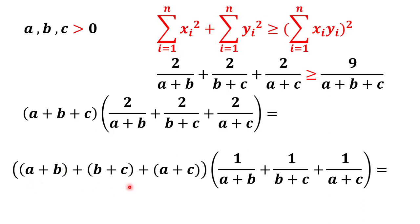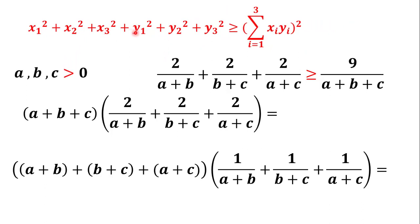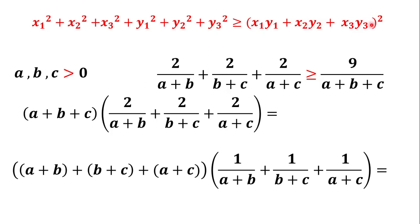In this case we have three terms in one parentheses and three fractions in the other, so n is equal to 3. We can expand the sigma notation: sigma of xᵢ squared equals x₁² plus x₂² plus x₃², and sigma of yᵢ squared equals y₁² plus y₂² plus y₃². And sigma of xᵢyᵢ, all squared, equals (x₁y₁ plus x₂y₂ plus x₃y₃) all to the power of 2.